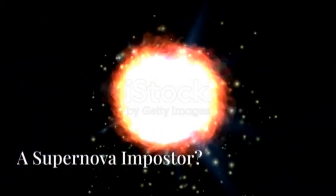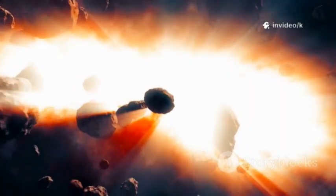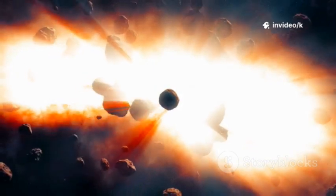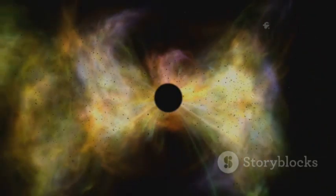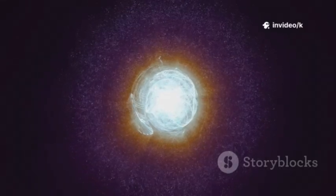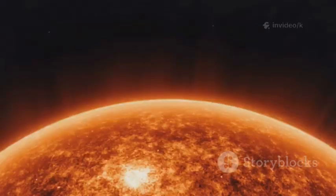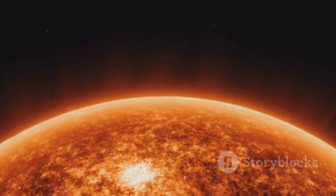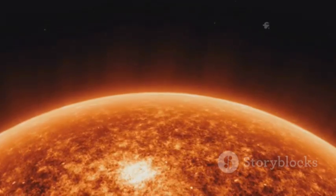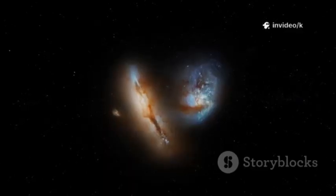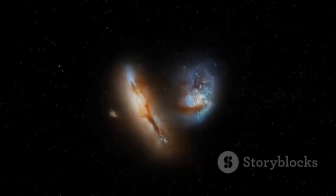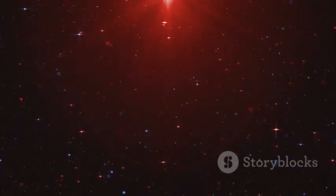During the Great Dimming, many thought Betelgeuse was about to explode. But the merger theory changes everything. The dimming wasn't a sign of imminent supernova, it was ancient debris blocking our view. Betelgeuse was acting like a supernova imposter, faking the symptoms of its own demise. The merger may have even extended Betelgeuse's life by mixing in fresh fuel. Instead of accelerating its end, the event could have postponed it. Betelgeuse is now a peculiar case, massive and old, but with features of a younger, more energetic star. We mistook echoes of its past for signs of its future. The real cause was a long-ago cosmic feast, not an impending explosion. Betelgeuse's true timeline is now more mysterious than ever.